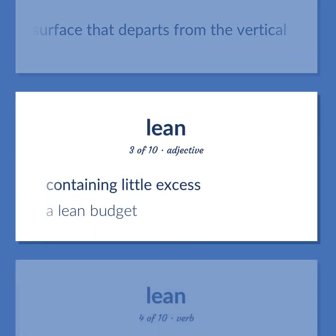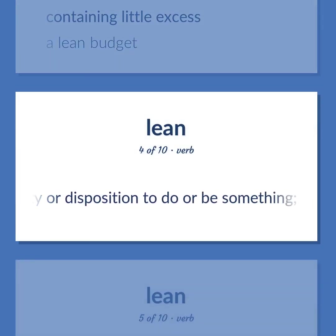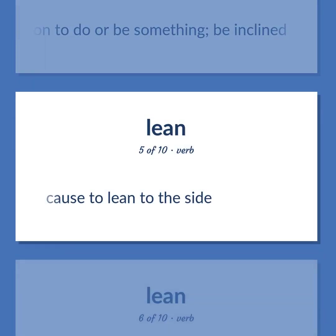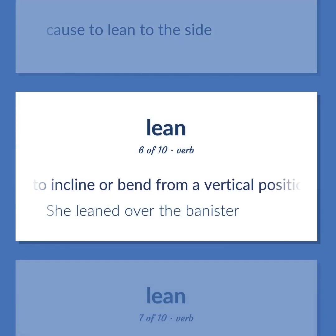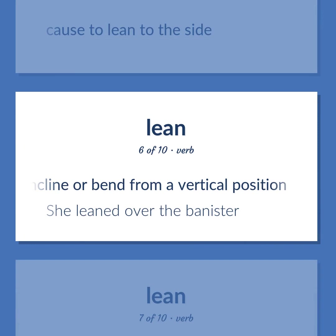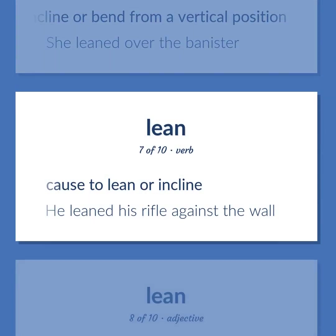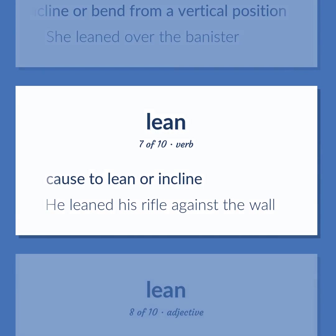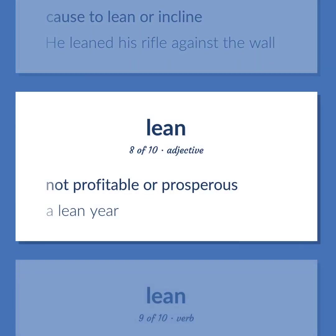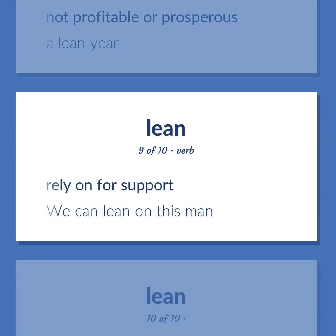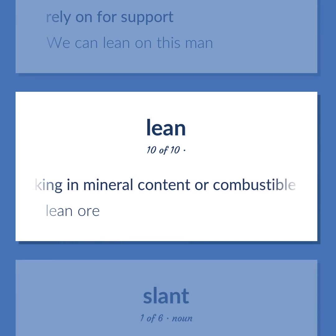The property possessed by a line or surface that departs from the vertical. Containing little excess — a lean budget. Have a tendency or disposition to do or be something; be inclined. Cause to lean to the side. To incline or bend from a vertical position — she leaned over the banister. Cause to lean or incline — he leaned his rifle against the wall. Not profitable or prosperous — a lean year. Rely on for support — we can lean on this man.